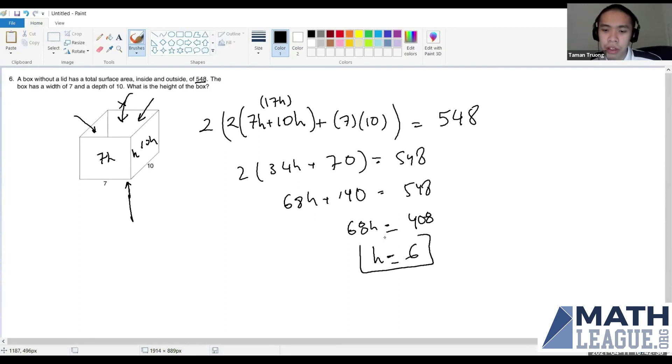This is 17h. 17 by 2 is 34h. 34h plus 7 by 10 is 70. By 2 is 548. We get 68h plus 140 equals 548. 68h is 408. And we see that h is simply 6.